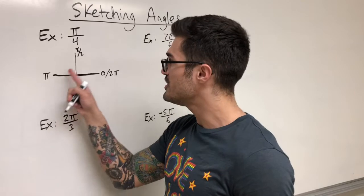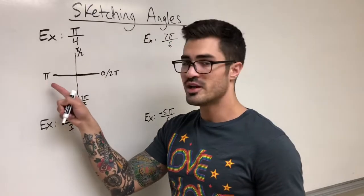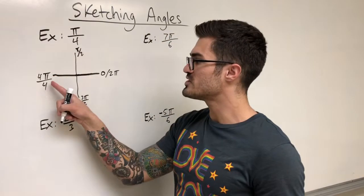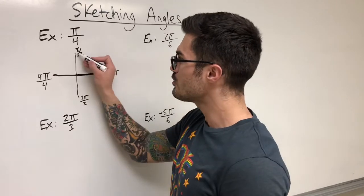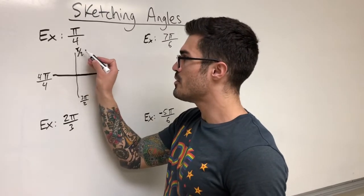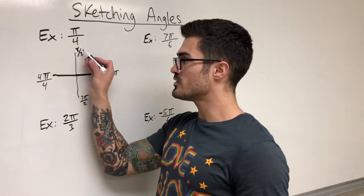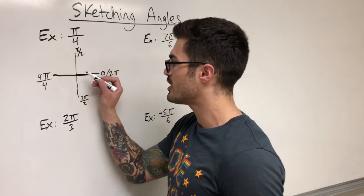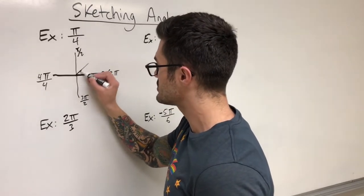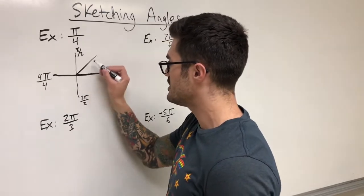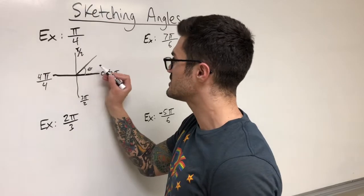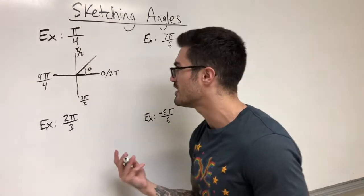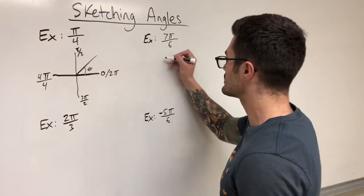So which quadrant is pi over four in? One way to find out is to write all values with a common denominator of four. Pi is just four pi over four, and pi over two is two pi over four. So pi over four is definitely before both of those — it's halfway between zero and two pi over four, splitting the first quadrant into two even pieces. So pi over four is graphed right there in quadrant one.